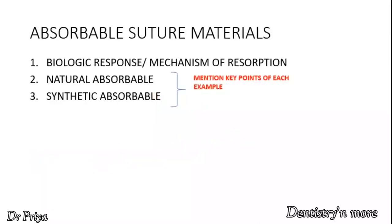Absorbable suture materials is a very direct and specific question. First, explain the biological response of the body to suture materials and the mechanism of resorption of absorbable suture materials. Then write about the natural and synthetic absorbable suture materials available. You need not mention the entire classification of suture materials — limit your answer to absorbable sutures only. Once you classify into natural and synthetic, list out all examples under each heading and mention key points about each example.